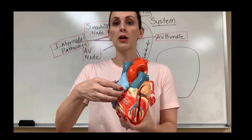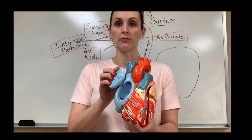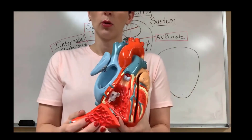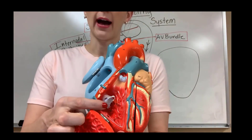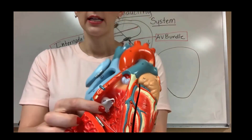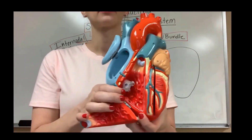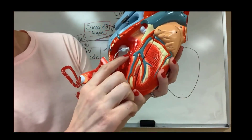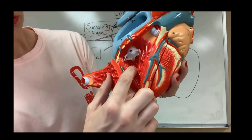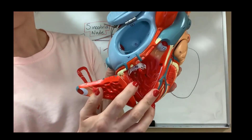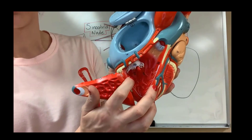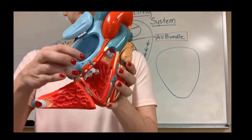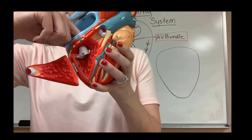From the right atrium, if we open our little flap here and the ventricular flap as well, we will see a valve. This valve is known as the tricuspid valve — tricuspid because we can see one, two, three cusps on it. So we have the tricuspid valve with three cusps on the right side of the heart.